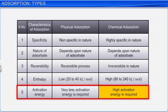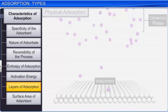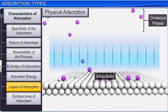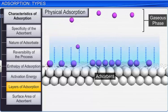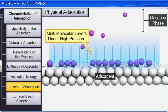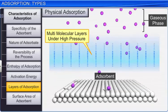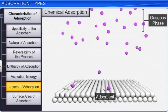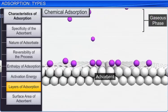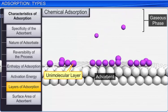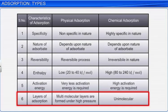Regarding molecular layers formed during adsorption: in physical adsorption, layers of gas molecules are adsorbed one over another by Van der Waals forces, so multi-molecular layers are formed under high pressure. In chemical adsorption, a chemical bond is formed only with molecules that come in direct contact with the surface of the adsorbent; hence, only a unimolecular layer is formed.